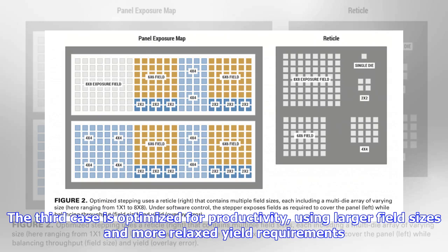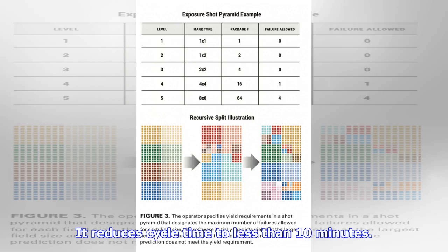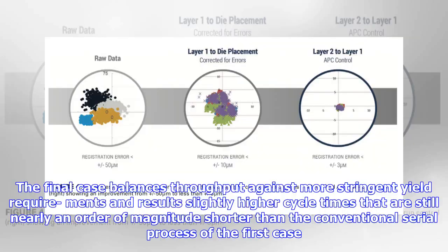The third case is optimized for productivity, using larger field sizes and more relaxed yield requirements. It reduces cycle time to less than 10 minutes. The final case balances throughput against more stringent yield requirements and results in slightly higher cycle times that are still nearly an order of magnitude shorter than the conventional serial process of the first case.